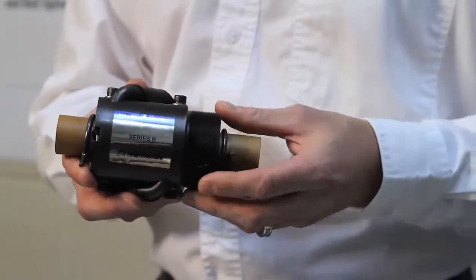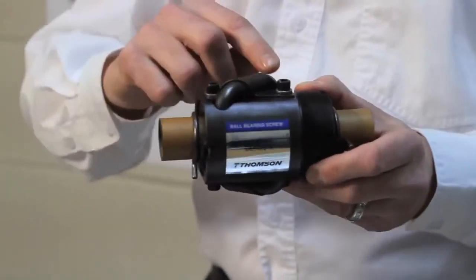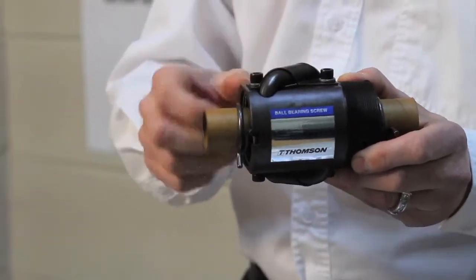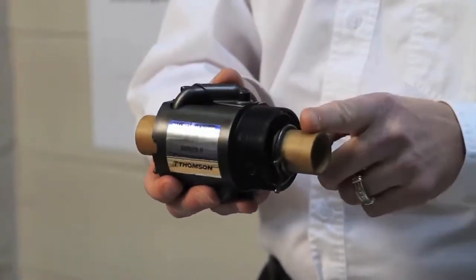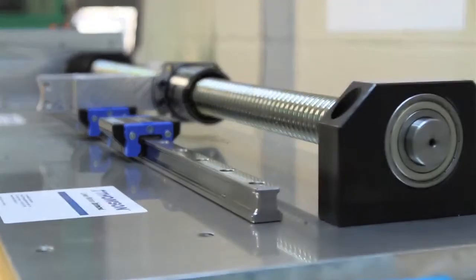It has all the major components of a ball nut, as you can see, the ball nut body itself. You've got the return tube system, which in this case is an external tube. What this one's shipped on is called a shipping arbor, and the arbor is constrained inside the ball nut.